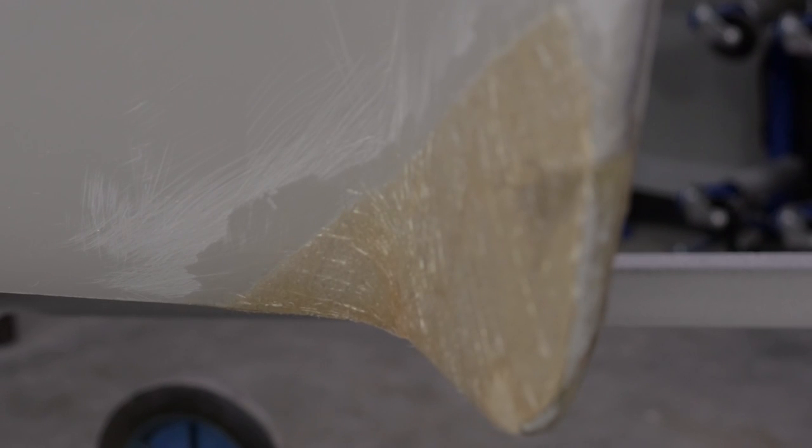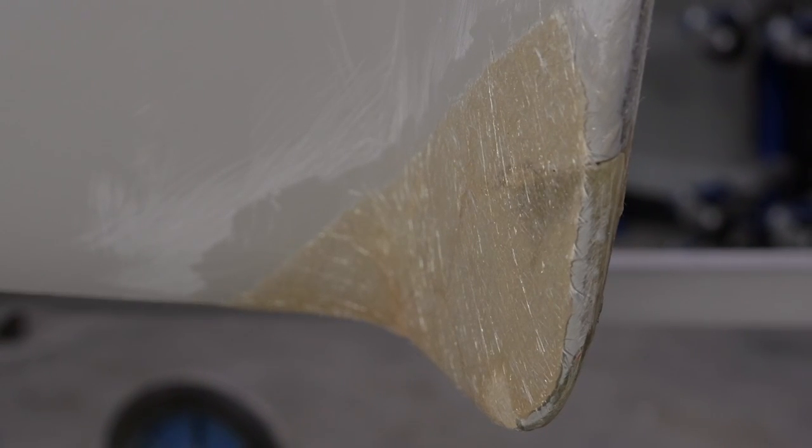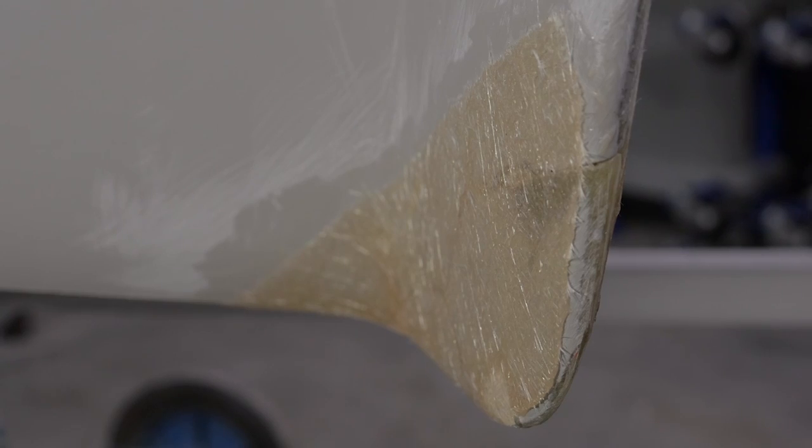To achieve a smooth finish, this fiberglass repair can now be treated with Isopon body fillers and painted with a top coat of your choice.